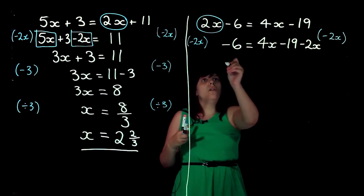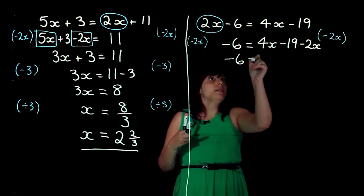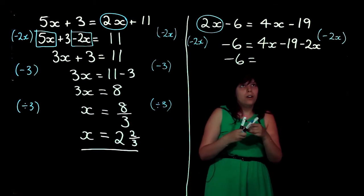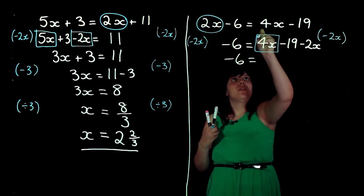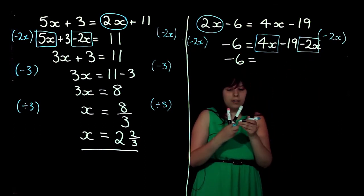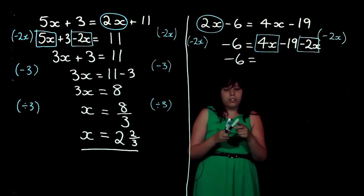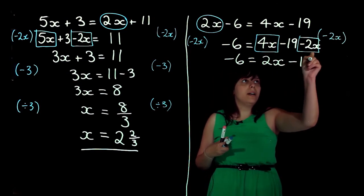On the other side, we've got 4x minus 19 minus 2x. So, on this side, we've got minus 6, and on that side, we need to simplify. So, I've got 4x and a minus 2x. So, 4x minus 2x is just going to be 2x. And then we've got our minus 19.